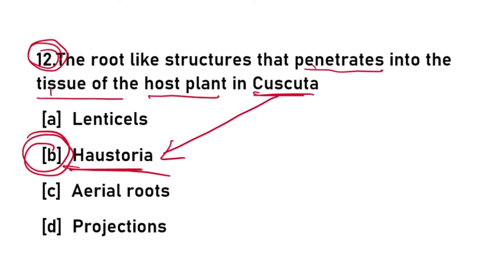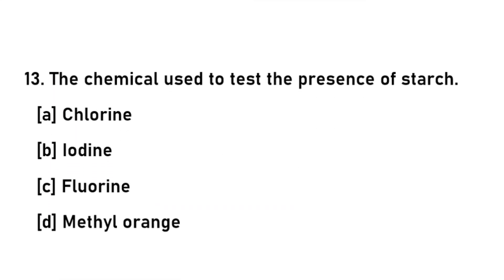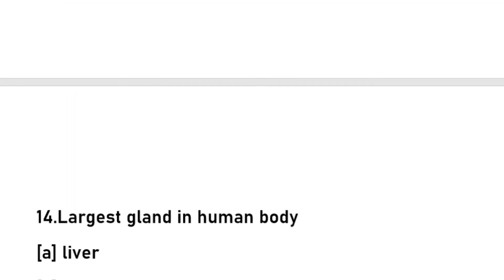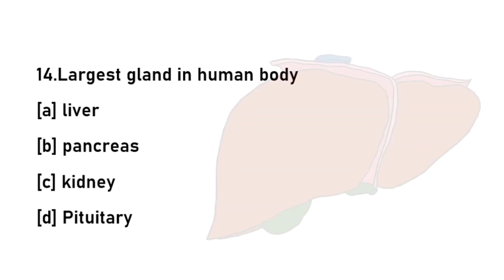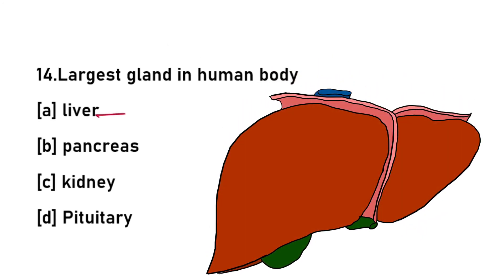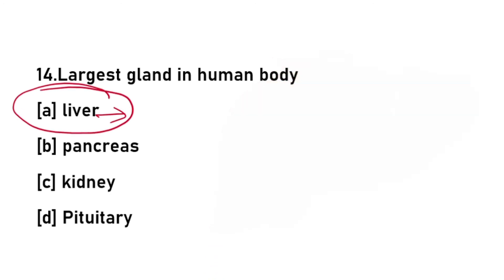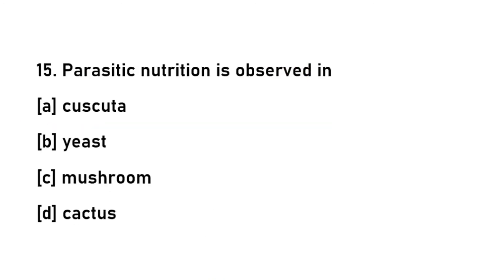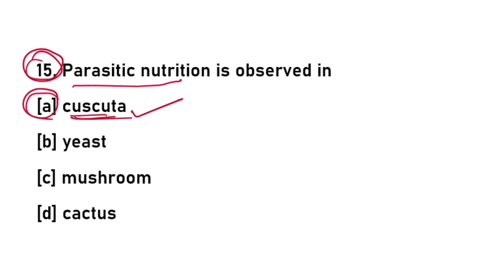Thirteenth question: the chemical used to test the presence of starch is iodine. Fourteenth question: the largest gland in the human body is the liver. Fifteenth question: parasitic nutrition is observed in Cuscuta.